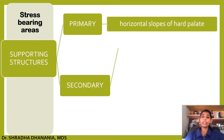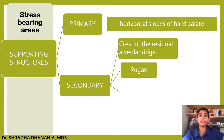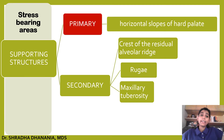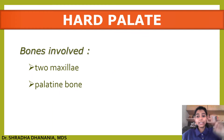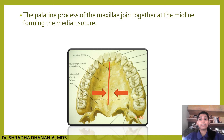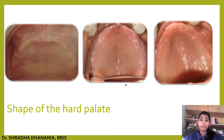Primary stress-bearing areas include the horizontal slopes of the hard palate. Secondary stress-bearing areas include the crest of the residual alveolar ridge, the rugae, and the maxillary tuberosity area. The hard palate is made up of two maxillae and the palatine bone. The palatine processes of the maxilla join together at the midline forming the median suture. The hard palate varies in shape — it can be flat, rounded, U-shaped, or V-shaped.